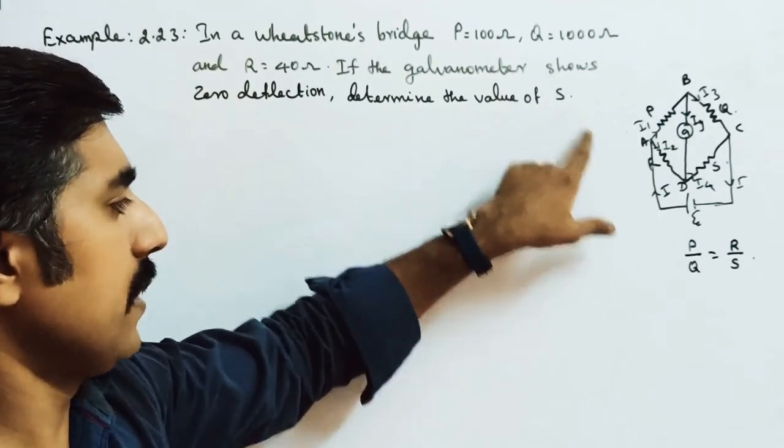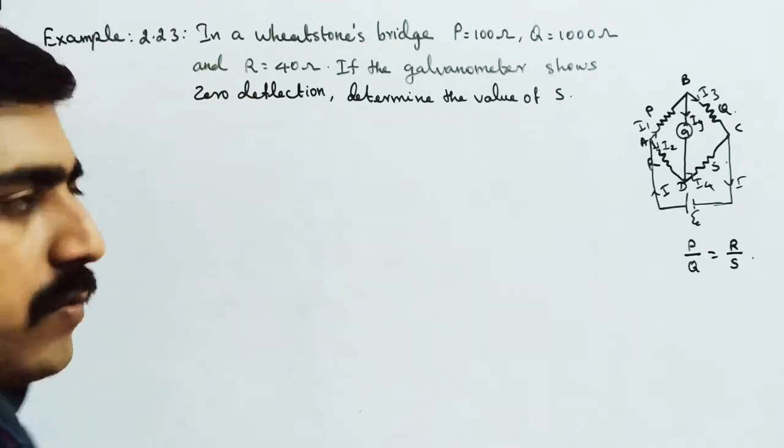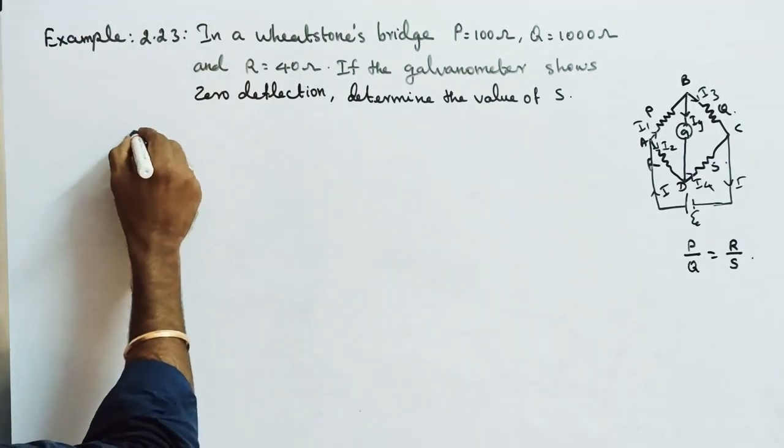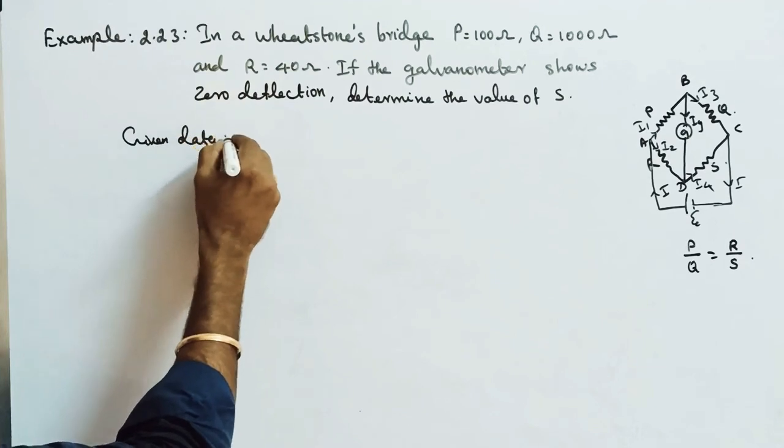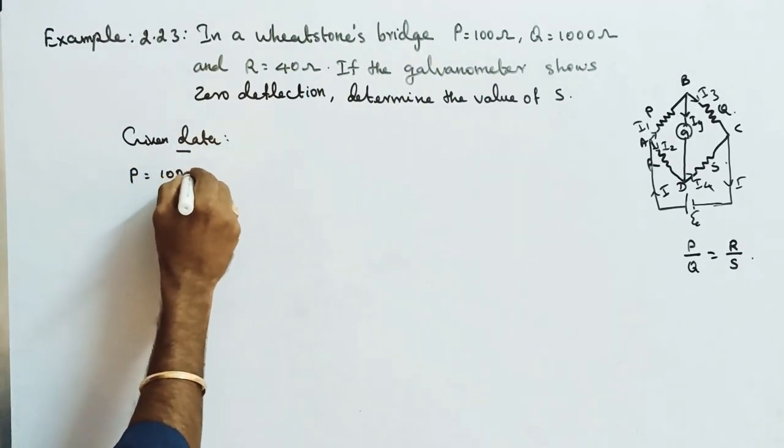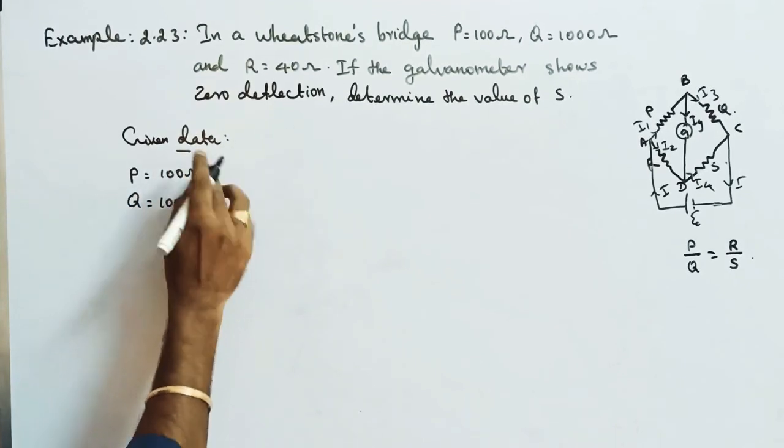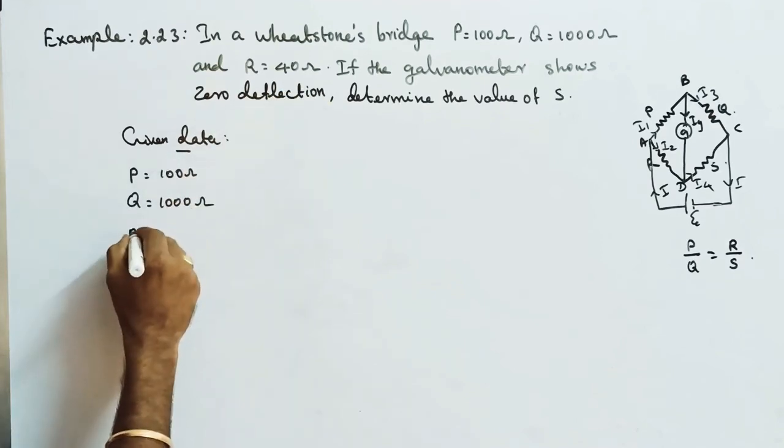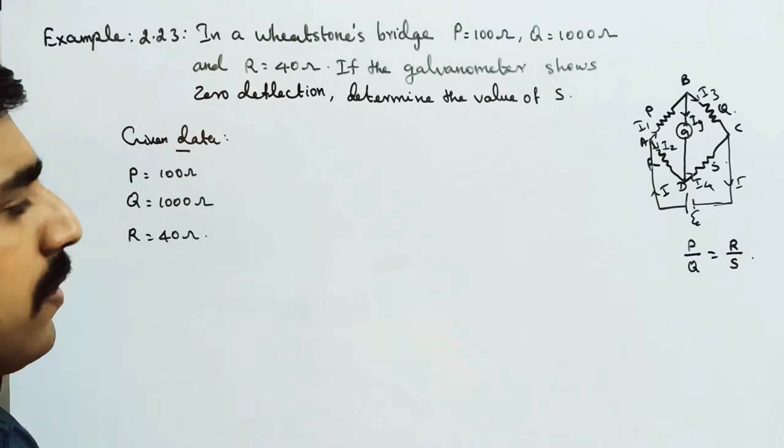Determine the value of S. So first, given data: P is equal to 100 ohm. Next, Q is equal to 1000 ohm.